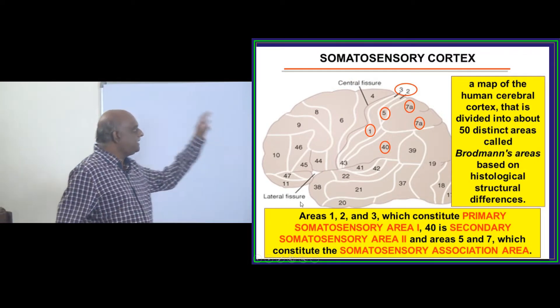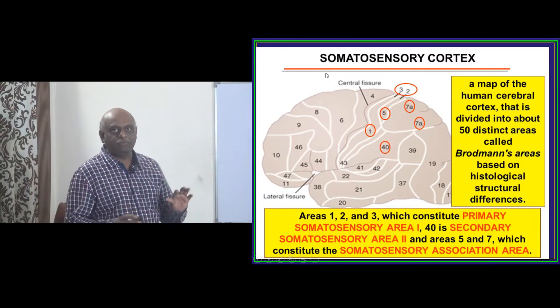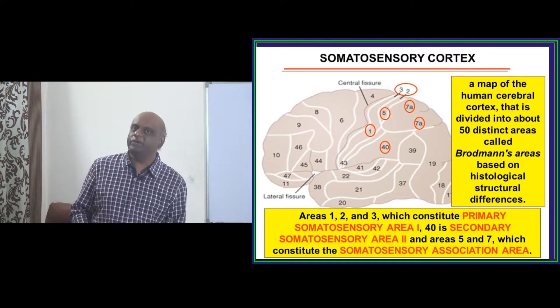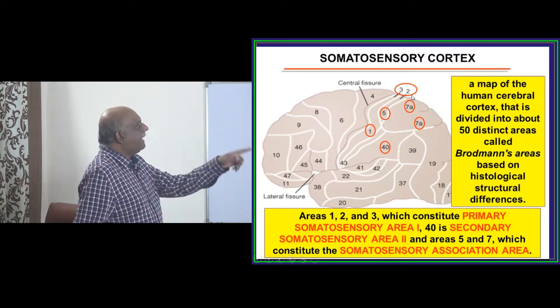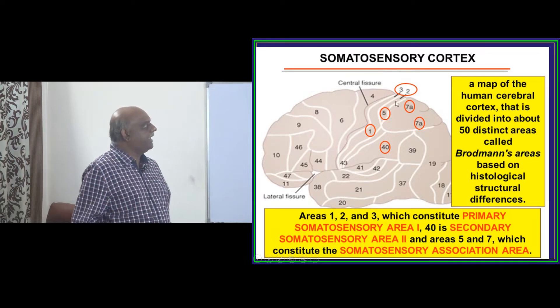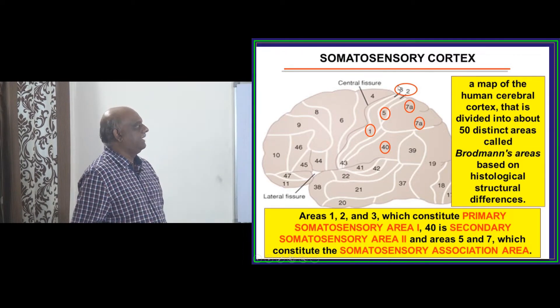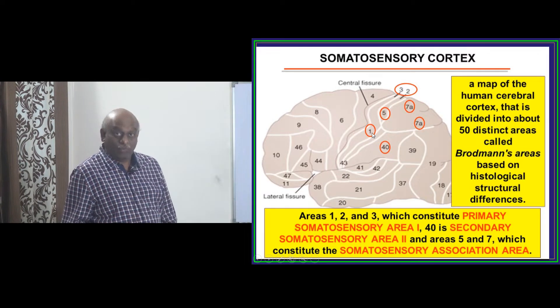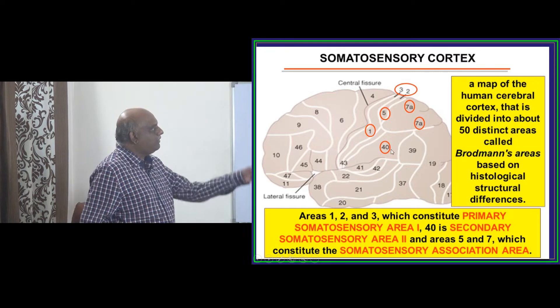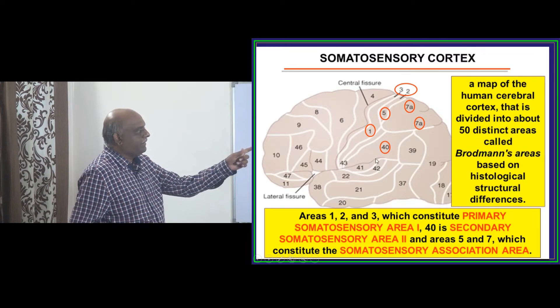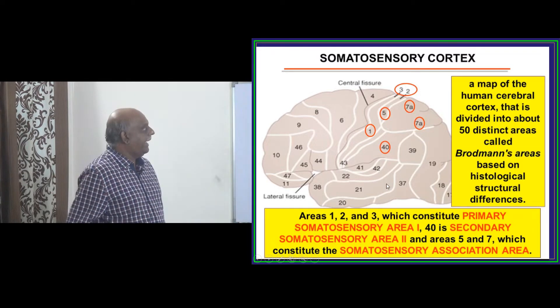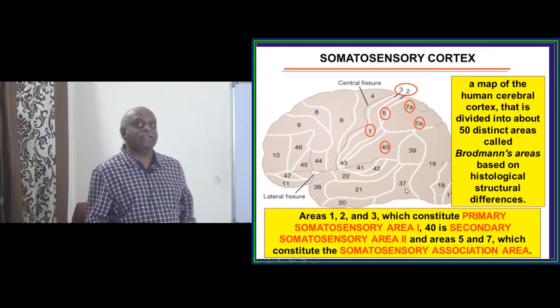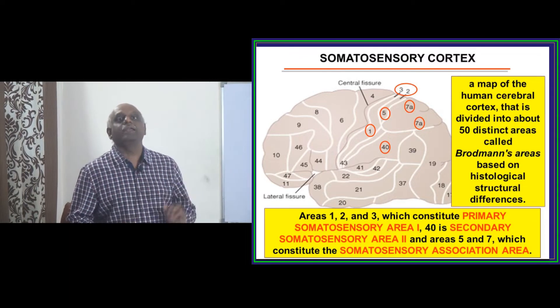So if you take this map, this is one map that should go and sit in your mind. Recently we discussed all Brodmann areas in yesterday's classroom. So this is a continuation of that. Area 1, 2, 3. What is this called? Area 1, area 2, area 3. That is basically called primary somatosensory area 1. Then you have the 40, which is called secondary somatosensory area 2. And the Brodmann 5 and 7, they are called the somatosensory association area. This is what you have to be very clear about.